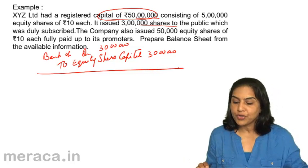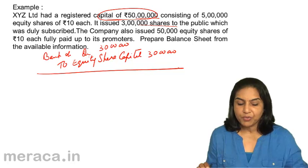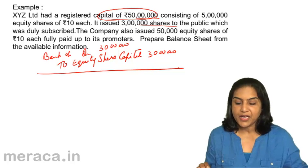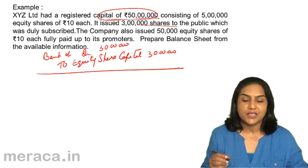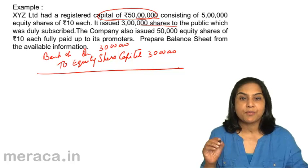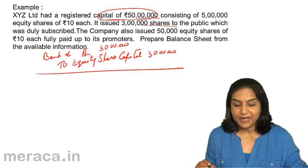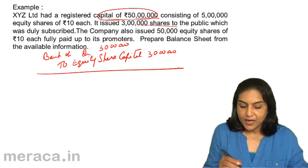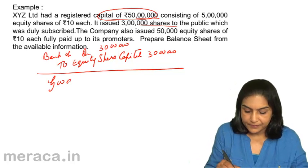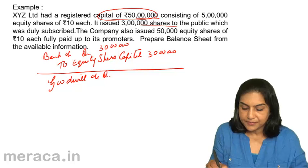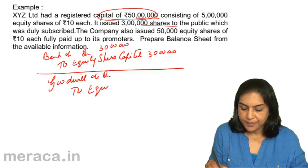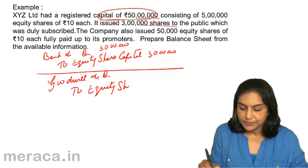The company also issued 50,000 equity shares of 10 each fully paid to its promoters. What is the entry for this? Since shares have been issued, share capital would be credited — and what is debited? Goodwill. So the entry is: Goodwill account debit to equity share capital, 5 lakhs.